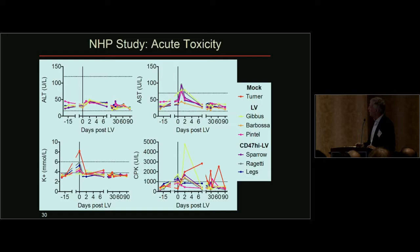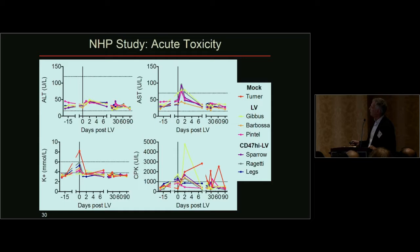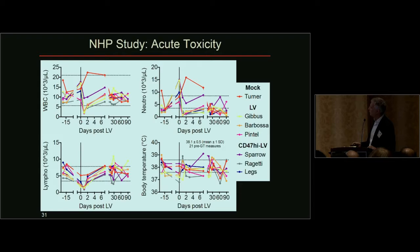We compared the standard vector with the CD47-high vector after a single IV administration. Looking at the acute reaction, there was a very limited response — somewhat less than what we saw in dogs. There was no fever, some increase in liver enzymes AST mostly within range, and some increase in kalemia also seen for the vehicle, likely related to anesthesia. The only reproducible finding in terms of acute response was a transient drop in white blood cells, mostly due to lymphocyte drops, possibly indicating an acute response as lymphocytes migrate from vessels into the liver.